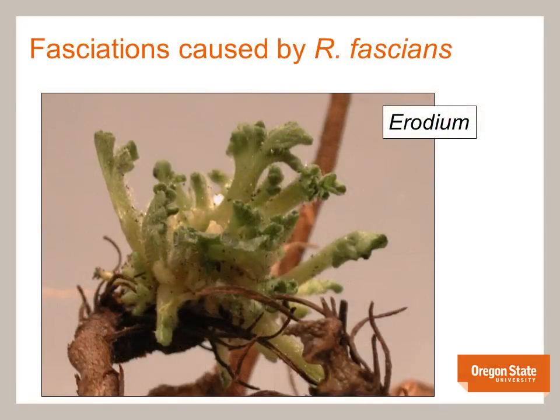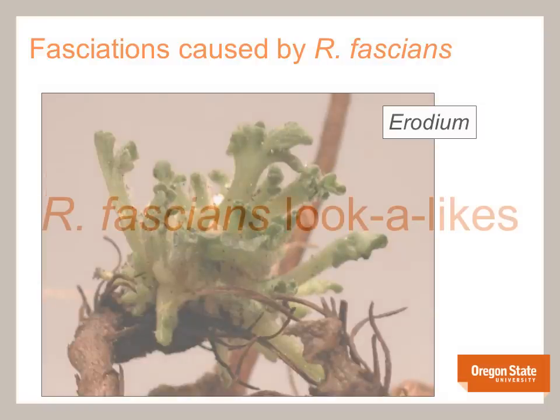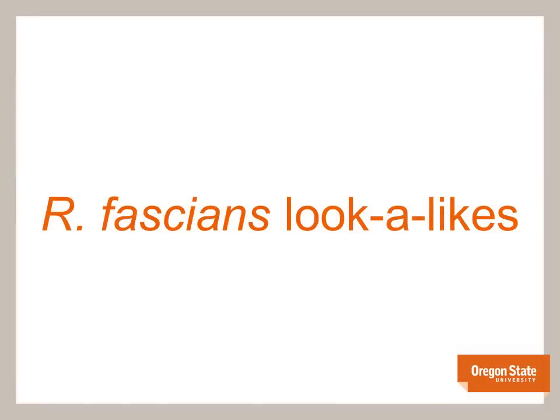As the species name indicates, Rhodococcus fascians can also cause fasciation on numerous hosts where stems have a flattened appearance. This type of symptom is often combined with shoot proliferation as seen on this erodium plant. Rhodococcus fascians can mistakenly be diagnosed as symptoms inflicted by Agrobacterium tumefaciens, viruses, or eriophyid mites, or shoot proliferation caused by exposure to growth hormones or herbicides. Correct diagnosis is essential to make sound management decisions.